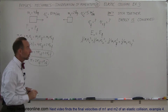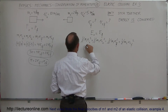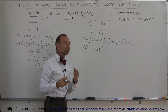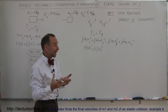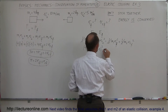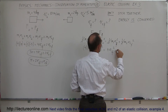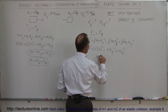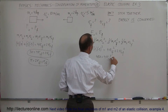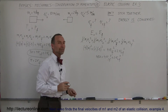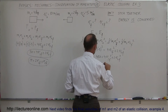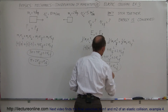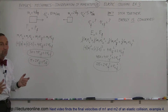Doing the same with the energy equation: 4×10² + 2×(−5)² = 4·V1f² + 2·V2f². Notice the minus doesn't matter because we square it — kinetic energy can never be negative. Simplifying the left side: 400 + 50 = 450. Dividing everything by 2, our second equation is: 225 = 2·V1f² + V2f².